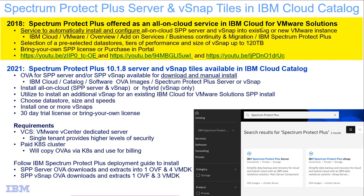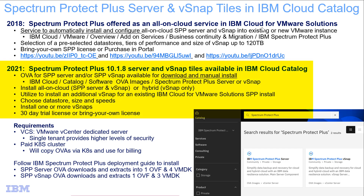There are some YouTube videos out there on that service. What we're announcing now is that the Spectrum Protect Plus Server and vSnap tiles are available in the IBM Cloud Catalog. When you choose these tiles, it will download the OVA for the Spectrum Protect Plus Server and/or the Spectrum Protect Plus vSnap, and then you will manually install them following the normal deployment guide. This enables you to install either as an all-on-cloud or as a hybrid in the IBM Cloud, and you can choose whatever data store sizes and speeds you want.